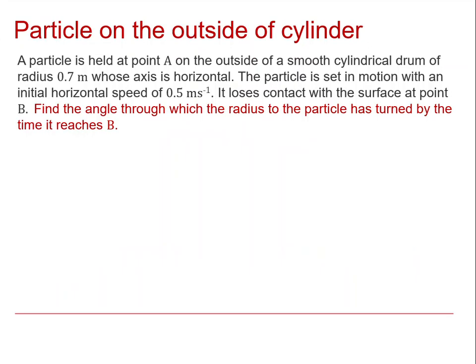Let's begin with that setup. We've got a particle at point A at the top of the circle on the outside of a smooth cylindrical drum of radius 0.7 metres. The axis of the drum is horizontal, so we're working in a vertical section. The particle is set in motion with an initial horizontal speed of 0.5 metres per second. I've shown this as u because I'm going to solve this problem in general terms, just as I've shown the radius as r rather than 0.7. At the end we'll bring in those values, but we'll do an analysis in general. It's actually simpler to do it that way.